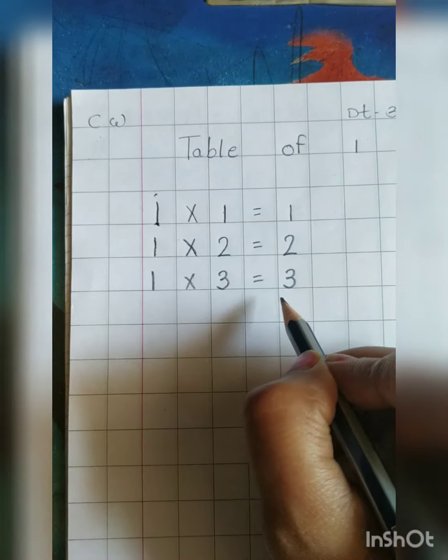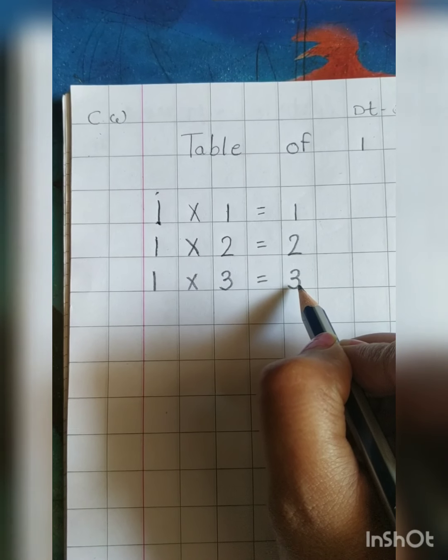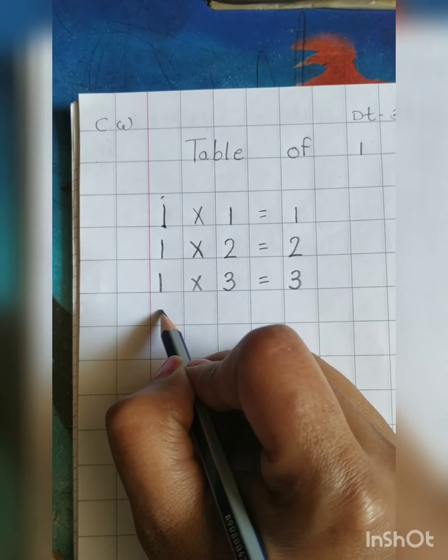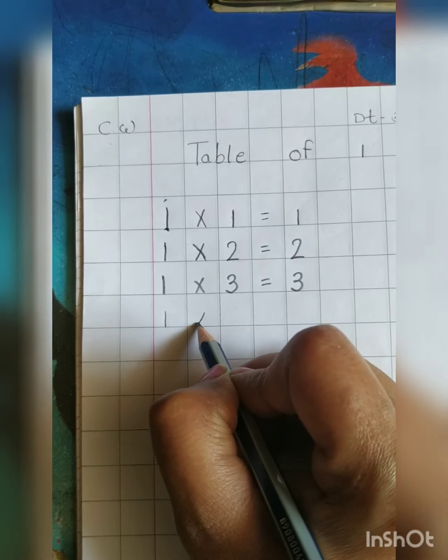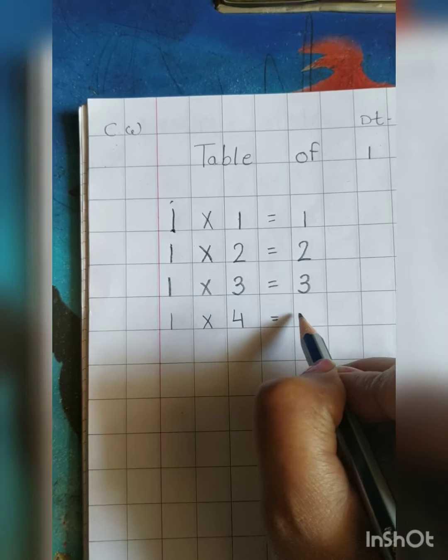You have to write numbers in different boxes. Okay? 1 times 4 is 4.